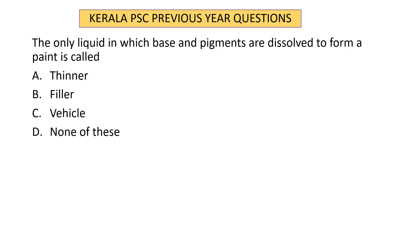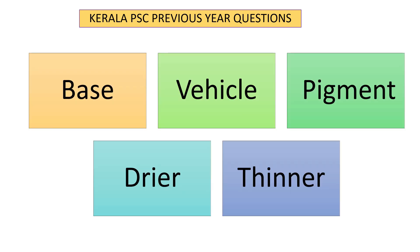The only liquid in which base and pigments are dissolved to form a paint is called the vehicle. Base and pigments are dissolved into the liquid and paint forms. There are mainly five constituents in paint: first base, then vehicle, then pigment, dryer, and thinner.